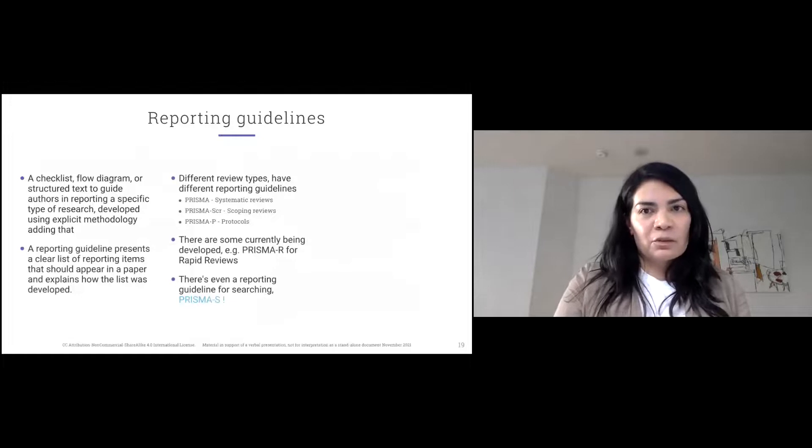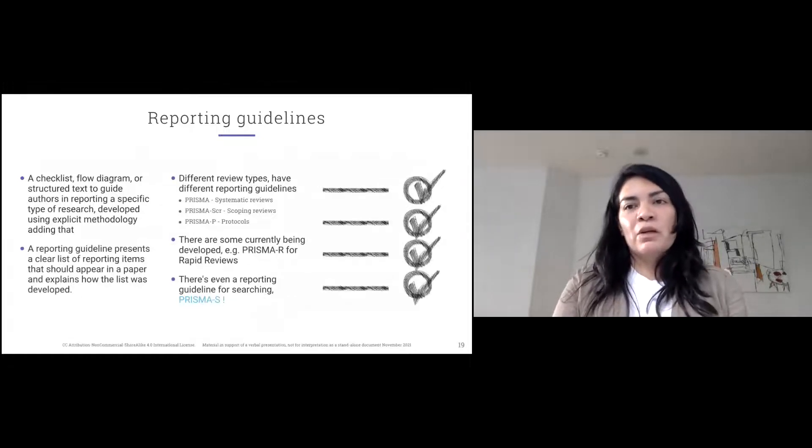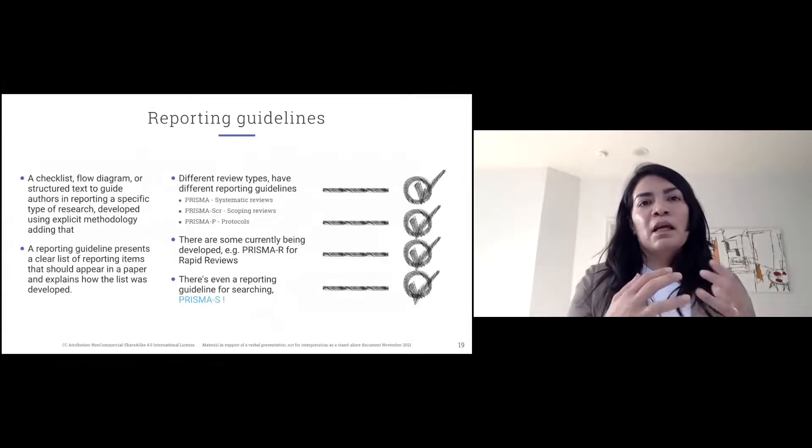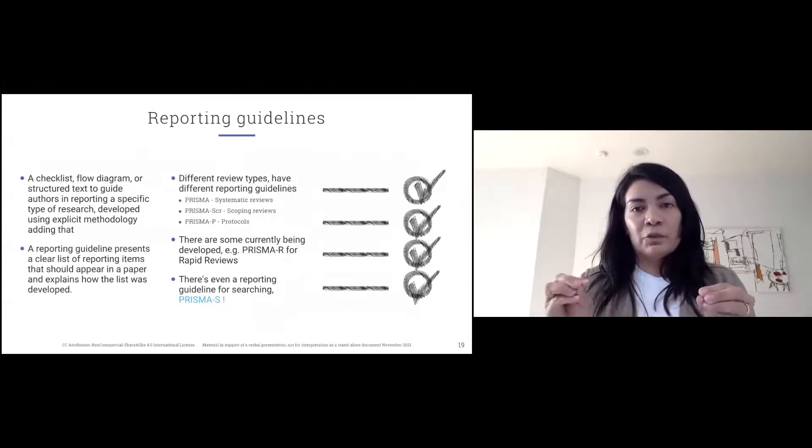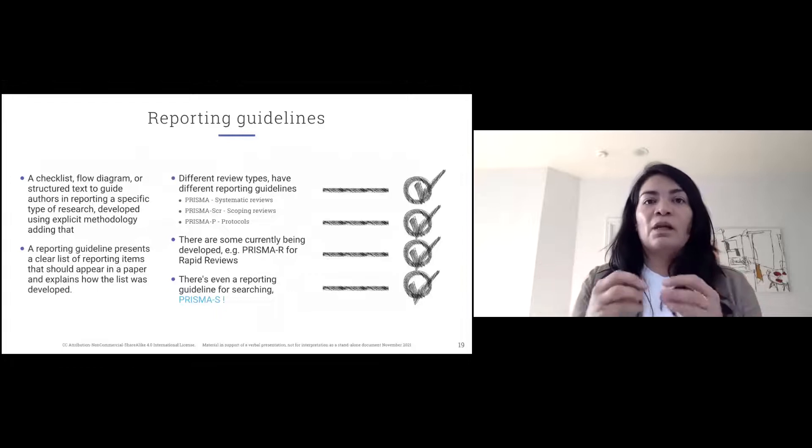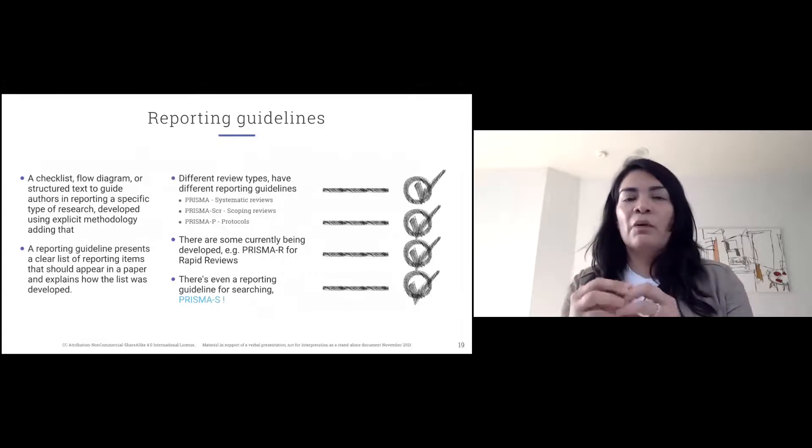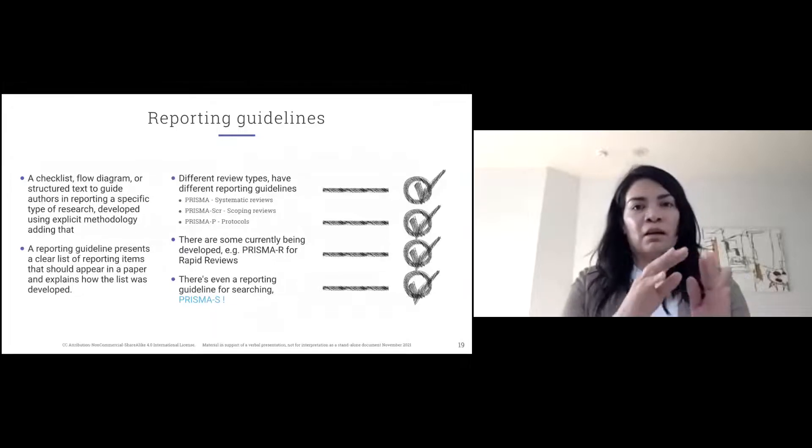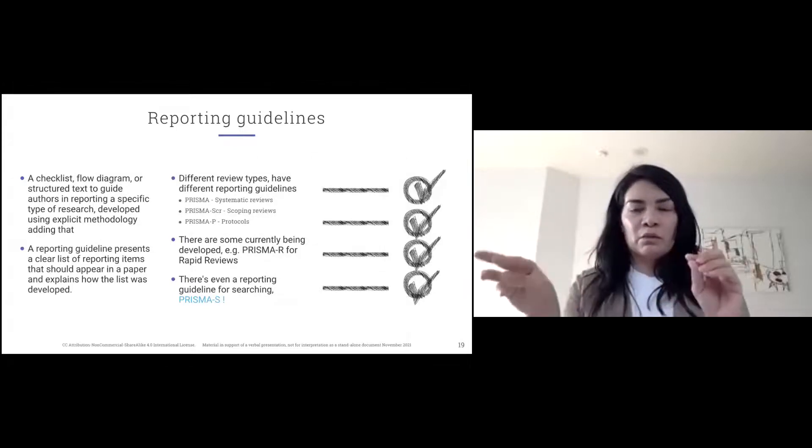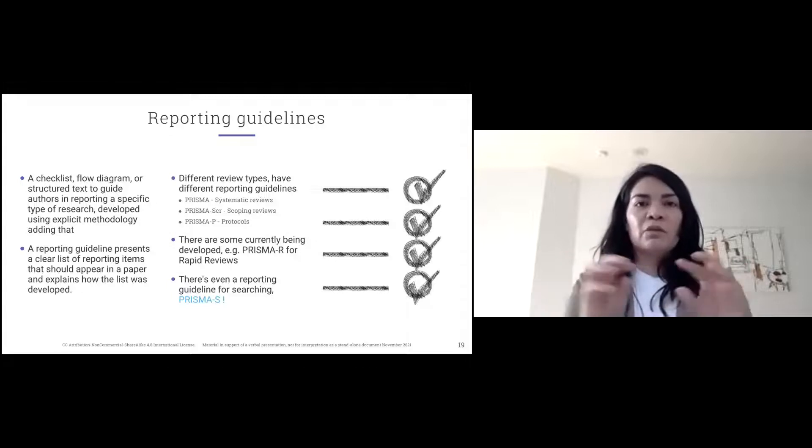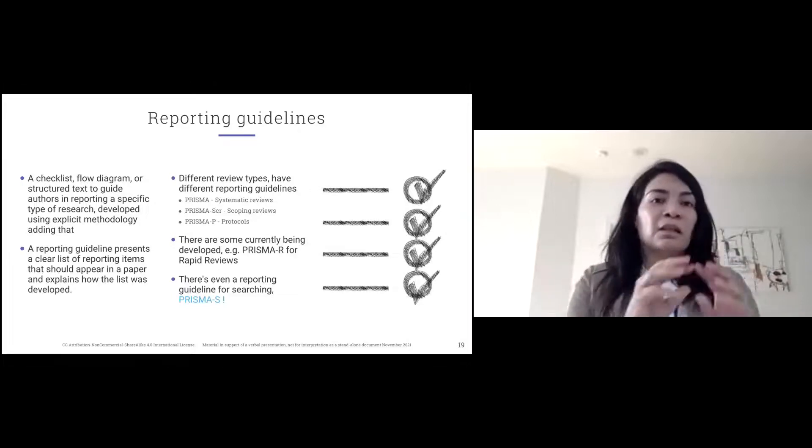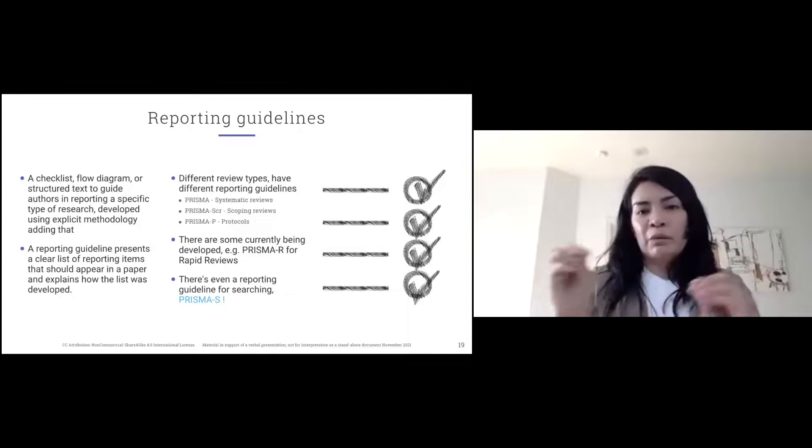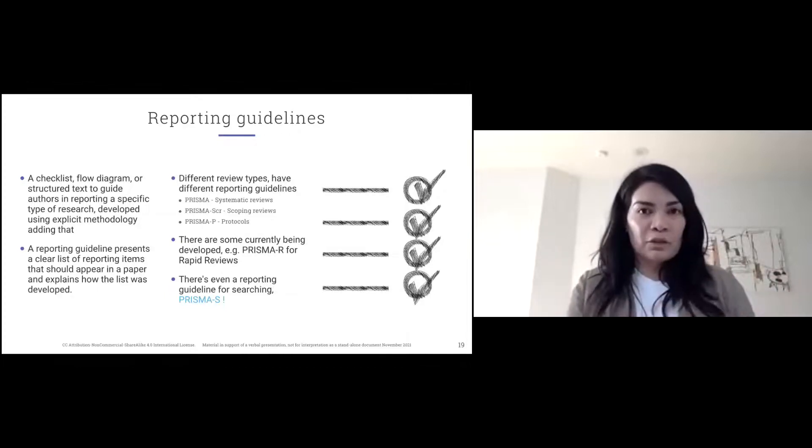Reporting guidance. These are also very important to remember. There's a method for conducting the study. And then there are the guidelines, which are beautiful. They're a checklist on how you're going to report your study, how are you going to report your manuscript. They are individual guidelines for each study type. There's a guideline for protocols, for scoping reviews, for systematic reviews, for rapid reviews. There's even a guideline for searching.